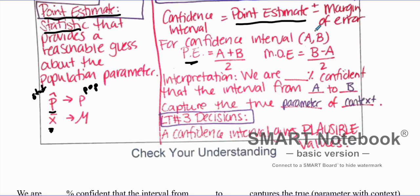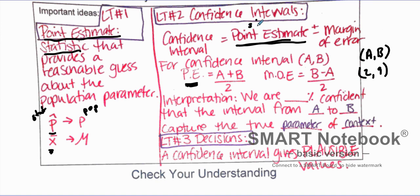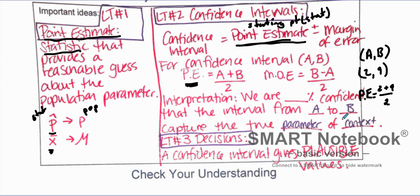Given a confidence interval from A to B, where does the point estimate come from? For example, if the interval goes from 2 to 9, the point estimate is right in the middle. You calculate it by taking A plus B divided by 2 — so 2 plus 9 equals 11, divided by 2, gives 5.5 as the point estimate.